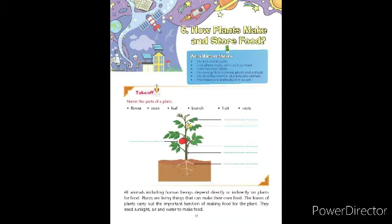All living things depend directly or indirectly on plants for their food, and the beauty of plants is that they make their own food. In most of the plants, the leaves prepare food in the presence of sunlight, air, and water.